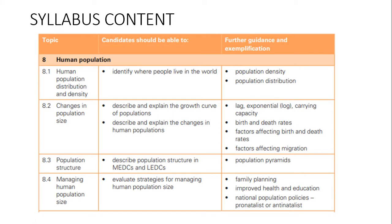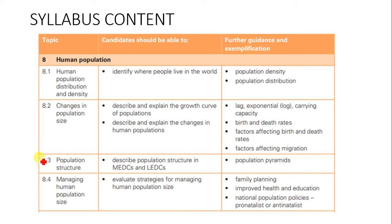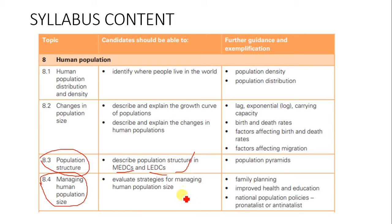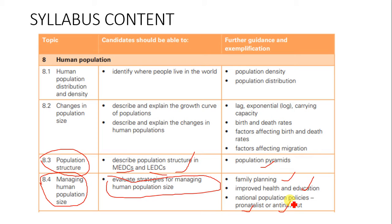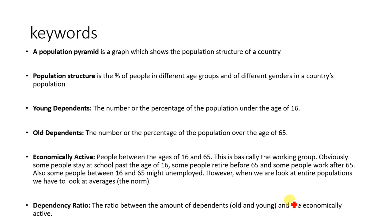In part two, we'll be looking at population structure and how to manage human population size. The major candidates should be able to describe population structure in MEDCs (more economically developed countries) and LEDCs (less economically developed countries). We should also be able to evaluate strategies for managing human population, including population pyramids, family planning, improved healthcare and education, and population policies like pro-natalist and anti-natalist policies.